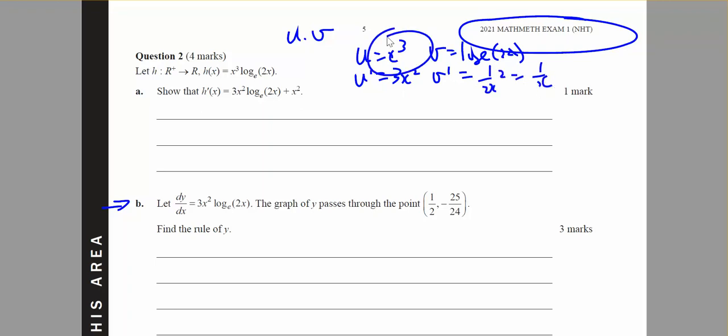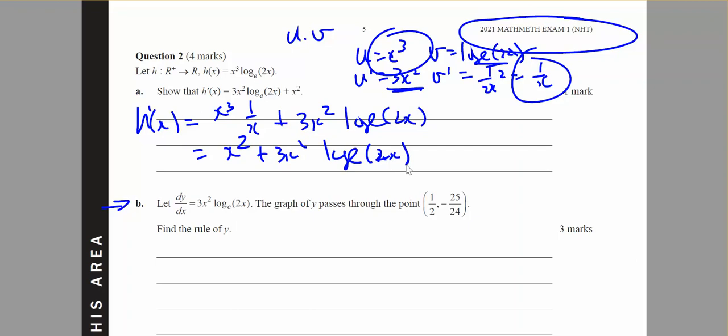So this times 1 over x, so h dash of x will then equal, this times this is x cubed times 1 over x plus 3x squared times log base e of 2x, multiplying this times this. So I get x squared plus 3x squared log base e of 2x, and that's exactly what I needed to show.